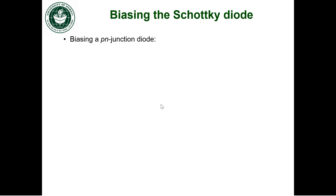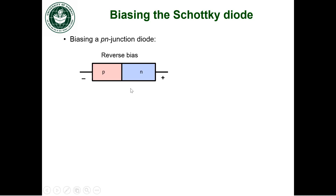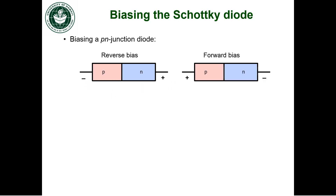Let's talk about biasing the Schottky diode. But first, let's review the PN junction. So if I have a PN junction, here's my P side, here's my N side — this corresponds to reverse bias, and this corresponds to forward bias.